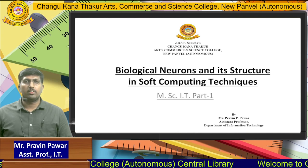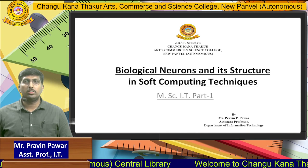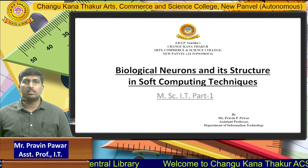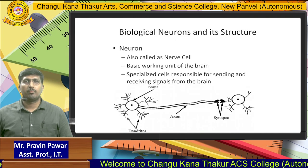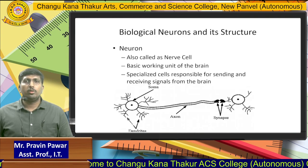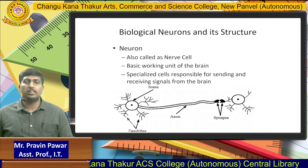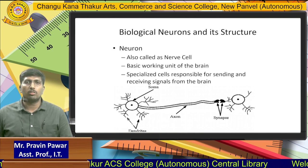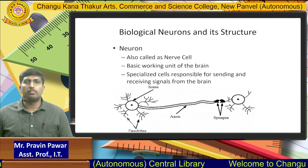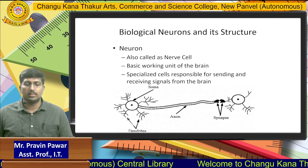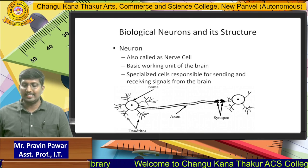Good afternoon everyone, my name is Praveen Pawar and we are looking at biological neurons and their structure in soft computing techniques. In this biological neuron structure, we are specifically looking at the biological structure of neurons, which are part of the human body and consist of five specific parts: dendrites, soma, axon, and synapse.